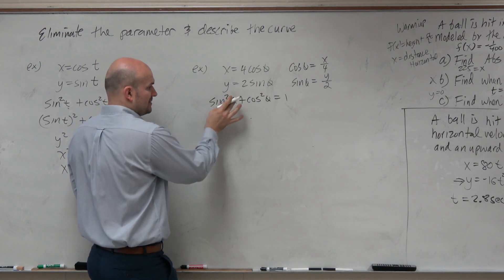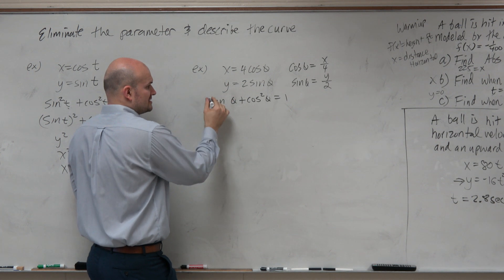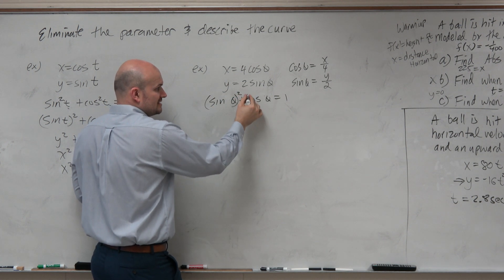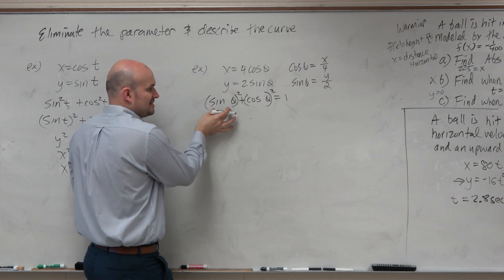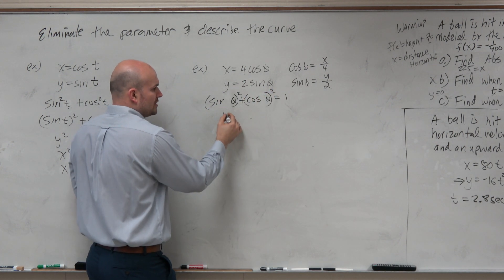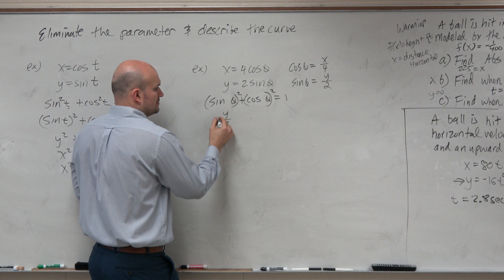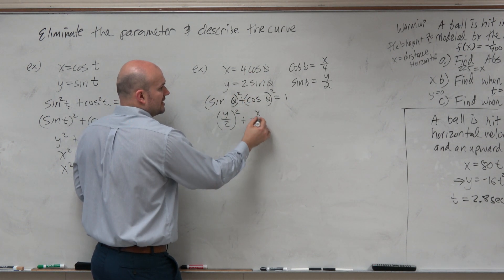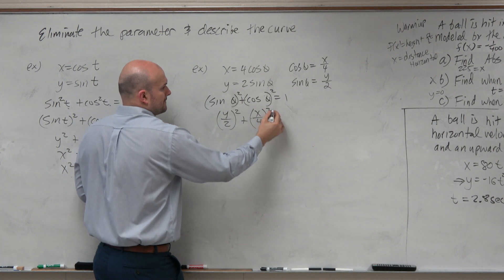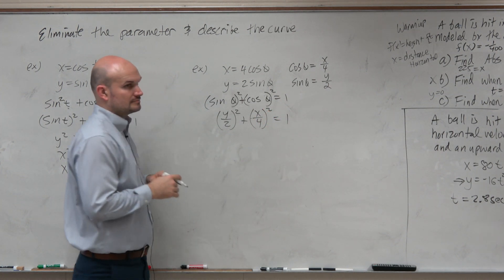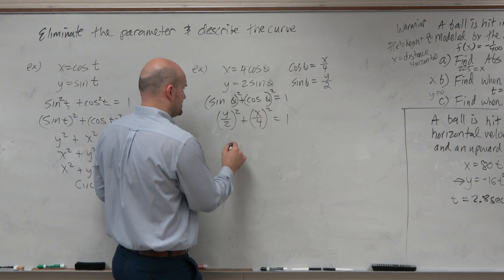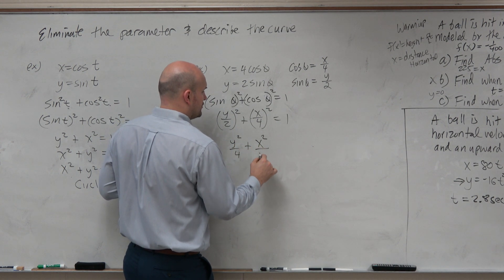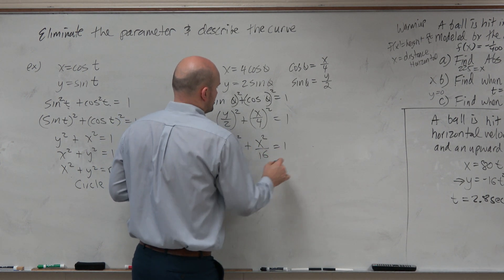So now, remember guys, sine squared theta is the same as sine theta squared. So that means I can just replace sine with y over 2 and I can replace cosine with x over 4. Now, I can square these to give me y squared over 4 plus x squared over 16 equals 1.